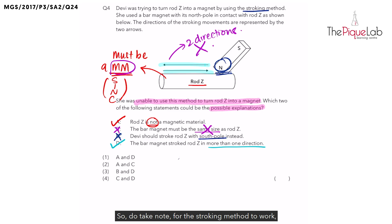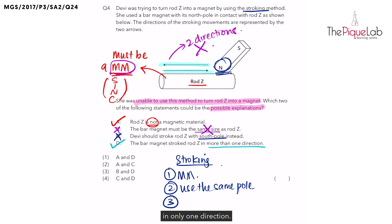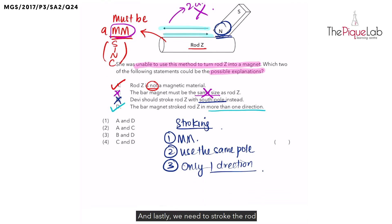So do take note. For the stroking method to work, we need to use number one, a magnetic material. Number two, we need to stroke the magnetic material using the same pole of a bar magnet. Number three, we need to stroke it using the same pole of the bar magnet in only one direction. And lastly, we need to stroke the rod at least 20 to 30 times. So the possible explanations for this question would be A and D and therefore answer is number one.